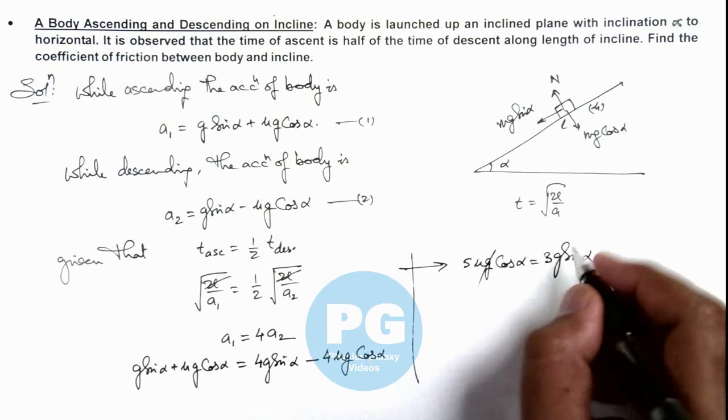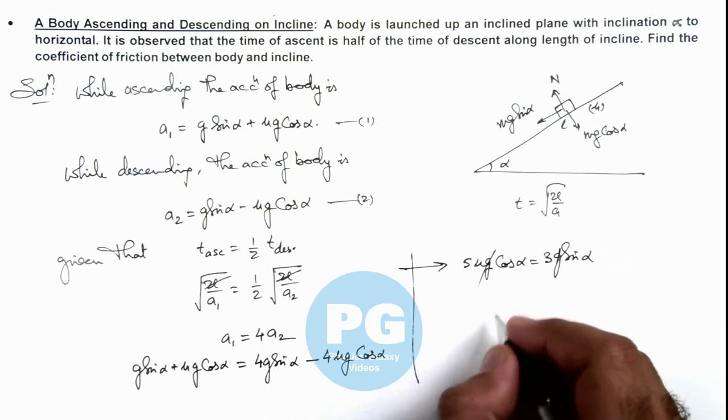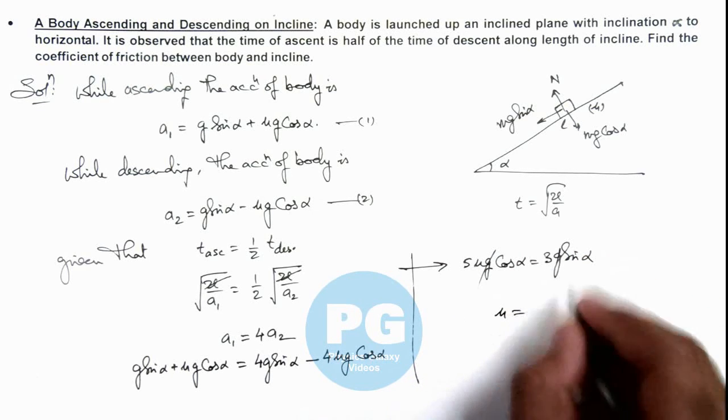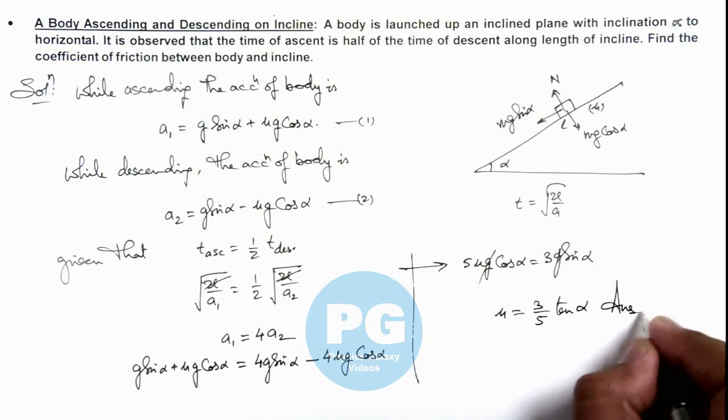And here you can see g gets cancelled out and simplifying we are getting the value of mu is 3 by 5 sine alpha by cos alpha. We can write it as tan alpha and this is the final result of this problem.